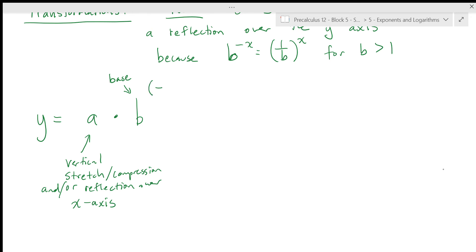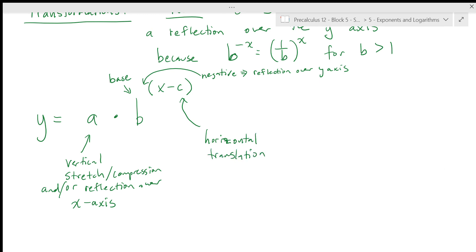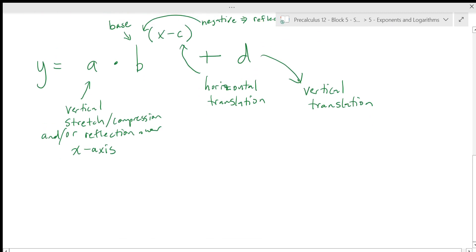We have b to the power of (x − c). If there is a negative sign in the exponent, that gives us a reflection over the y-axis. The c is our horizontal translation, and d is our vertical translation — these work the same as with any other function. We'll mostly focus on translations; a stretch or compression doesn't come up quite as often with exponential functions, but it does happen.